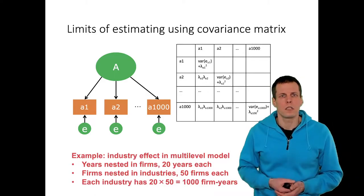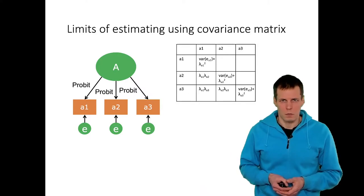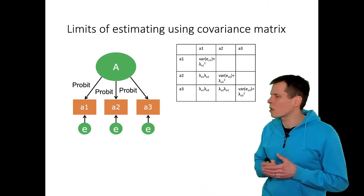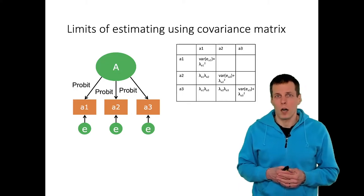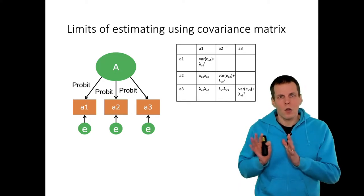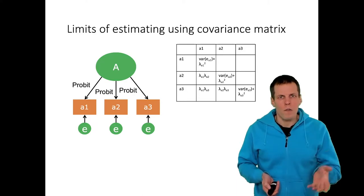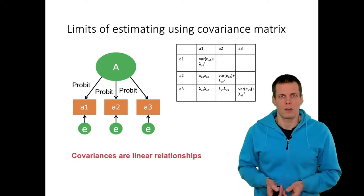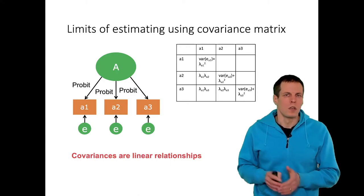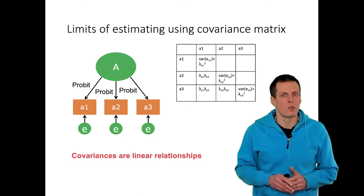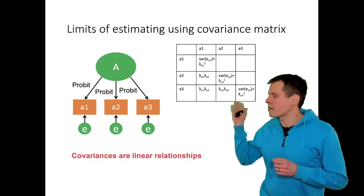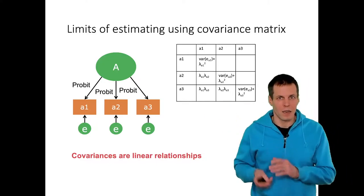Another boundary condition is non-linear models. If instead of a linear model you have a probit model for your indicators, we can no longer use covariances because covariances quantify linear relationships, and this is a non-linear model. So for non-linear models, we need to use alternate techniques — we can no longer rely on covariances because they are fundamentally linear.